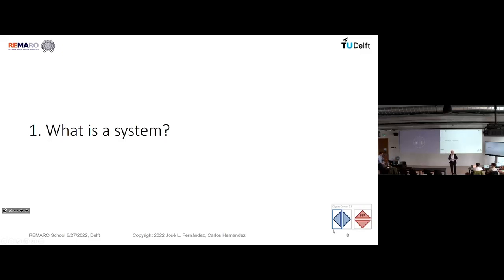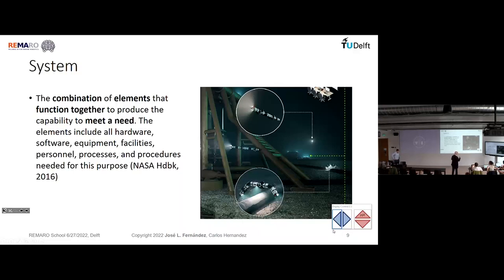Unfortunately, systems engineering is not taught in all universities, but it is taught at places like MIT, Johns Hopkins, and here in Europe, Cranfield. It is an important discipline, mainly in the aerospace sector, but also in other sectors with complex products. When we talk about a complex product or system, we are talking about a combination of parts functioning together to meet a need. The interfaces and meeting requirements are very important.